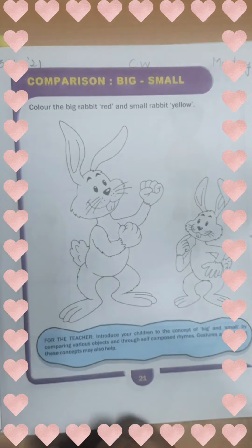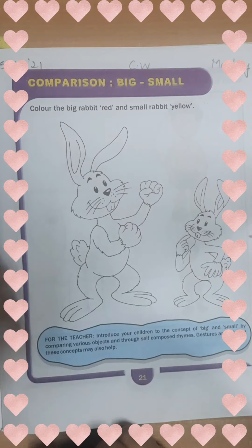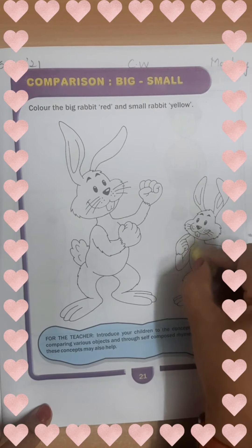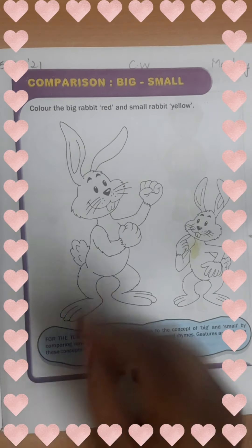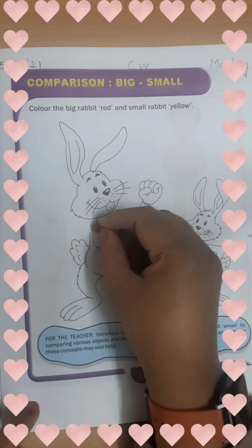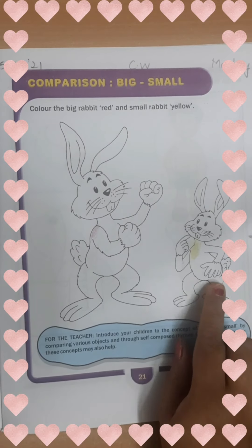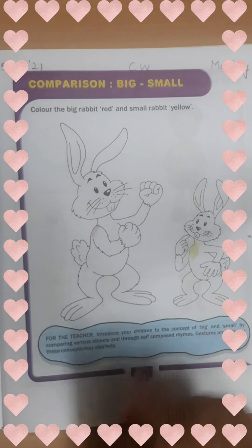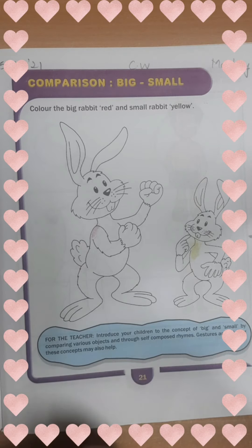Now which one is small? This one is small. We will color the small rabbit yellow, and the big one we will color red. I'm coloring it — you have to complete them all, red and yellow. We have done big and small with shapes also — big rectangle, small rectangle.